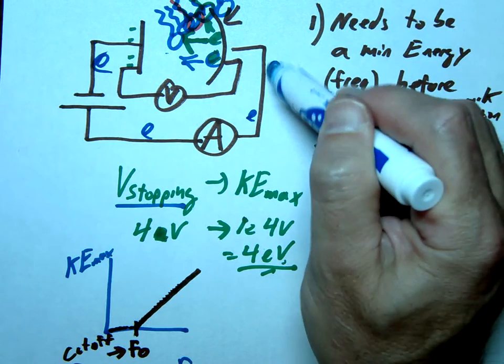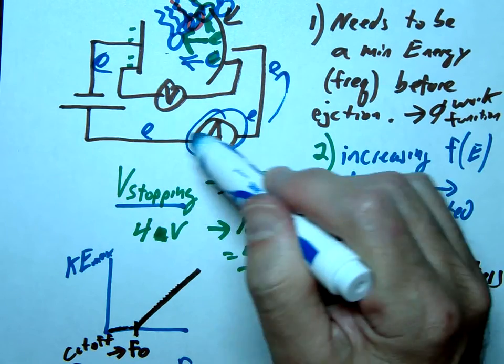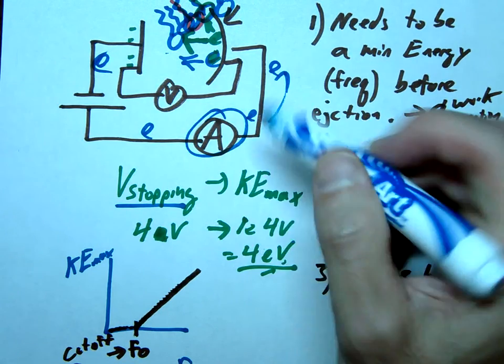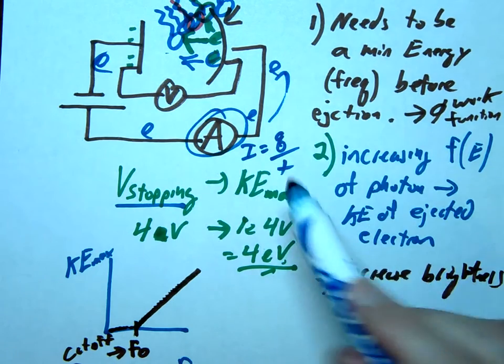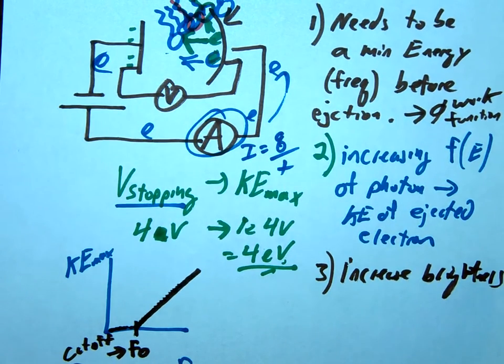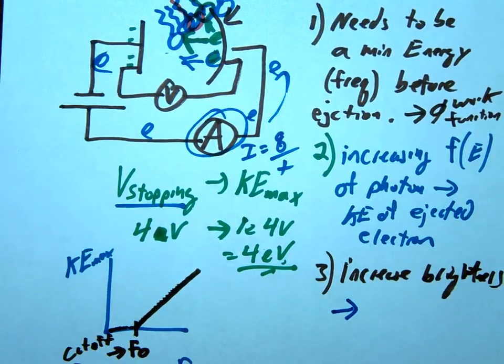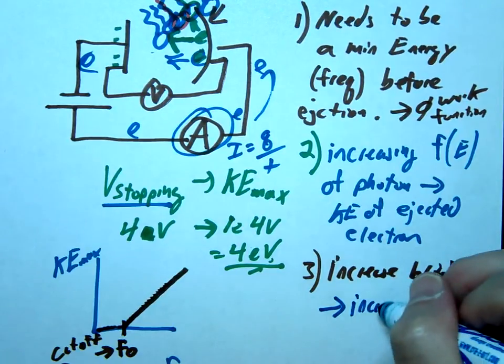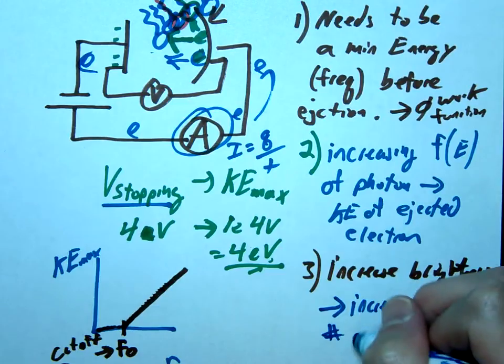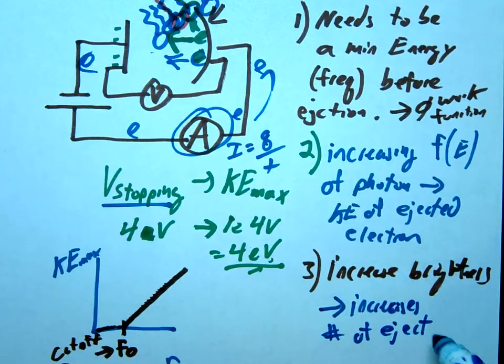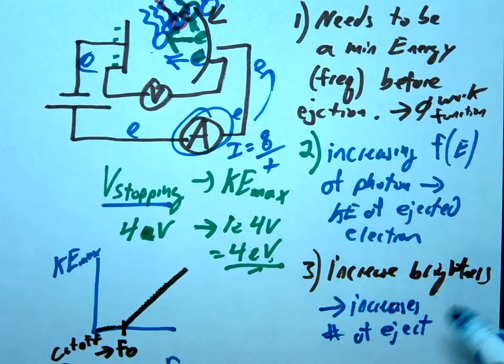Now, how would we measure that? We'd use our ammeter. So the purpose of that ammeter is to go ahead and measure the current. Remember, current is charged over time. And so if we have more electrons going through, our current is going to increase, and that's how we would measure that. So remember, increasing brightness, what that's going to essentially do is increase the number of electrons. But the energy of the individual electrons, the kinetic energy of the individual electrons, will be the same.